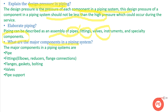Next question: what are the major components in a piping system? The components include pipes, fittings, gaskets, bolting, valves, and pipe supports — each and everything related to piping that is used in a system to convey fluid from one part of the plant to another.